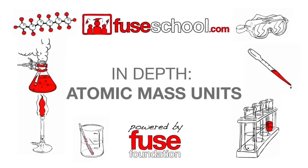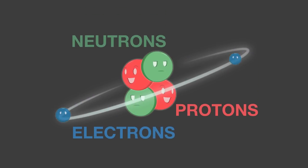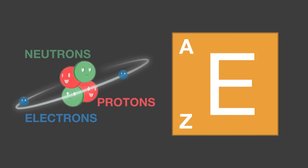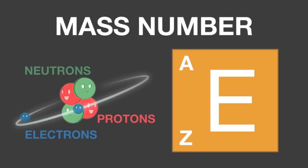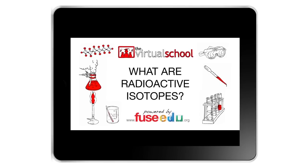In this lesson, we are going to look at atomic mass units in more detail. Before we go any further, you will need to be familiar with the parts of an atom and the terms used, in particular, the mass number. You may also wish to refer to our lesson on radioactive isotopes.